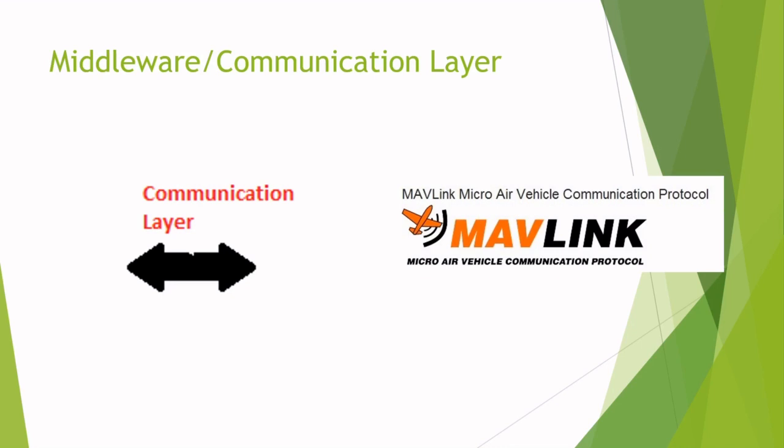If the ground control station wants the drone to land, it will package and send a message with command number 21 in it. The drone will receive this message, see that command number 21 means it needs to land, and then the appropriate code can be called on the autopilot software to land the drone. It's just a standard collection of messages.